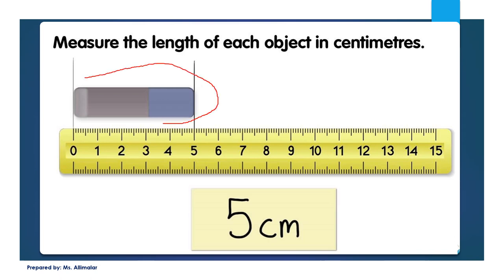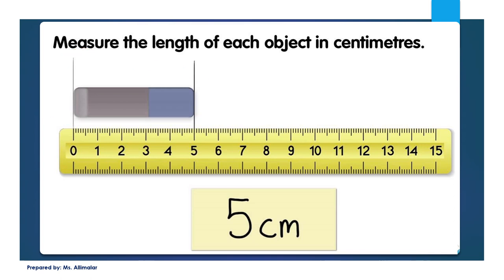Can you see the eraser? This is an eraser. Now, if you realize, they put the eraser exactly at zero. Always remember: if you want to measure something, put it exactly at the zero. From zero, the first part starts at zero, and then this is the eraser — the last part of the eraser ends at five.